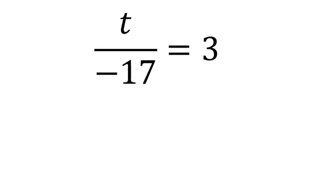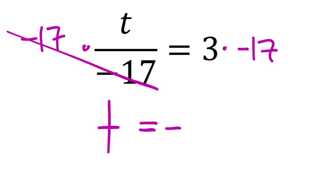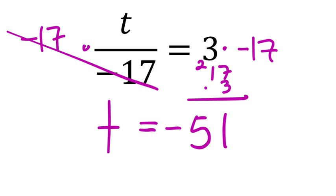One-step division equations: t ÷ (−17) = 3. Multiply both sides by negative 17: t = 3 × (−17) = negative 51. Checking: −51 ÷ −17 = 3. For −6x = 78: divide both sides by −6. Long division gives 78 ÷ 6 = 13, and with two negatives the answer is negative — wait, only one negative here, so x = negative 13. Check: −6 × (−13) = positive 78.